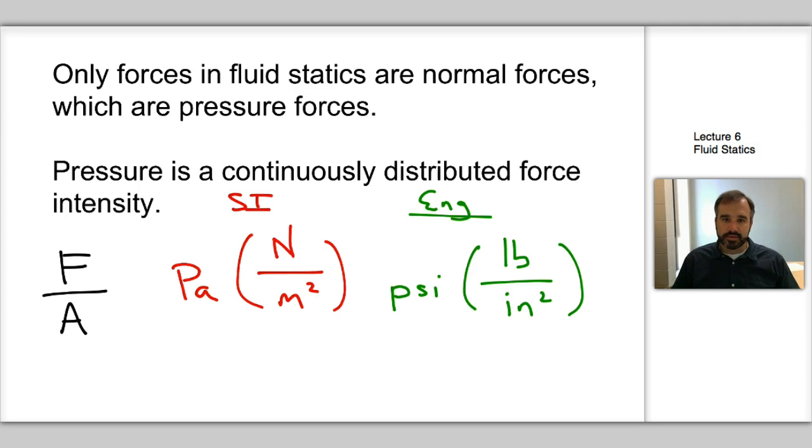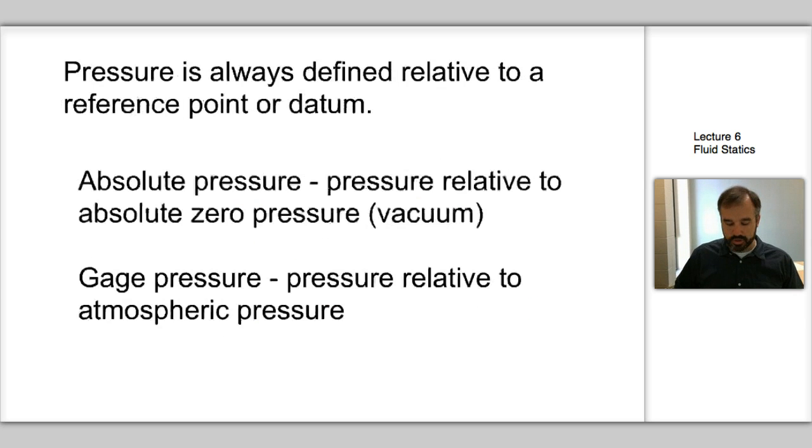The next thing we need to think about is what we're measuring the pressure relative to. What is the datum that we're going to use? There's two ways that it's commonly done. The first is absolute pressure, which is the pressure relative to absolute zero pressure. It's analogous to absolute temperature. We often use it in the ideal gas law. We use absolute pressure to define the state point of a gas or a liquid. In English units especially, you'll see the term PSIA, where the A here is telling you that that's absolute pressure.